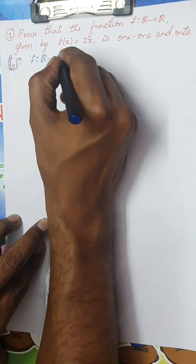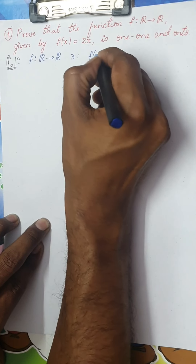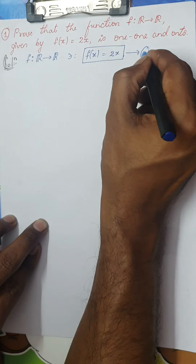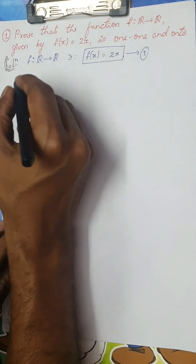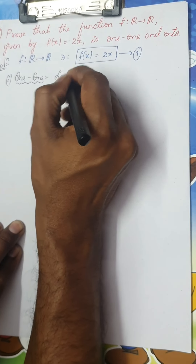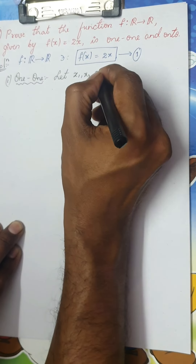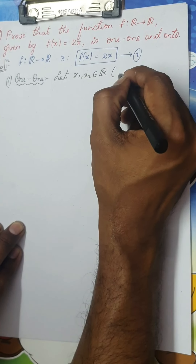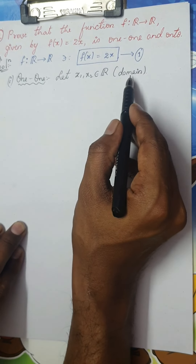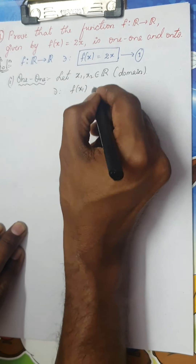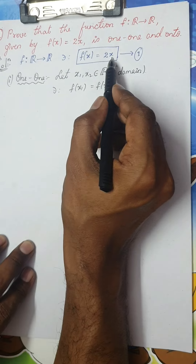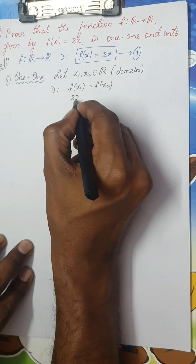First write down the defined part. f is defined from R to R such that f(x) = 2x. Let me consider this as equation 1. Once equation 1 is ready, I will consider the first case, which is to prove the 1-1 condition. Consider two elements x1 and x2 which belong to R — the domain set R — such that f(x1) = f(x2).